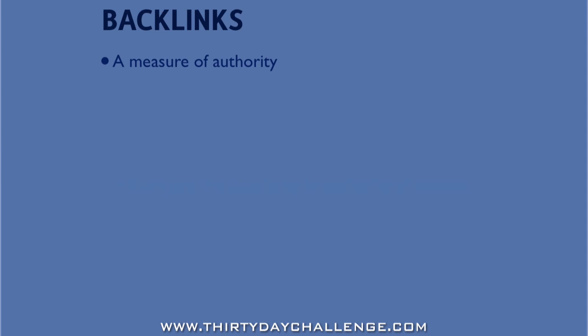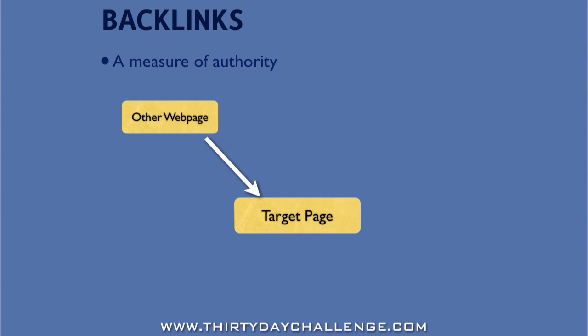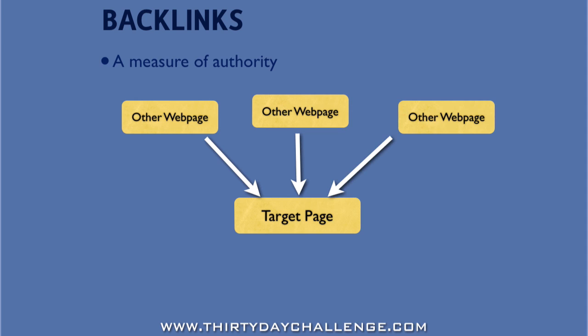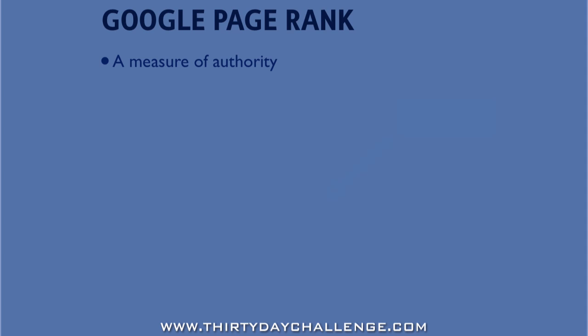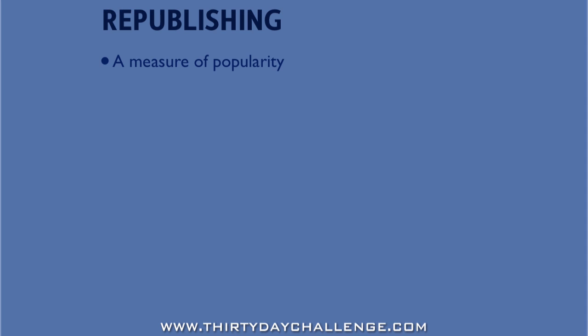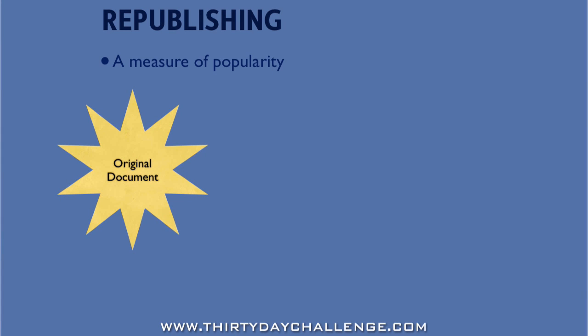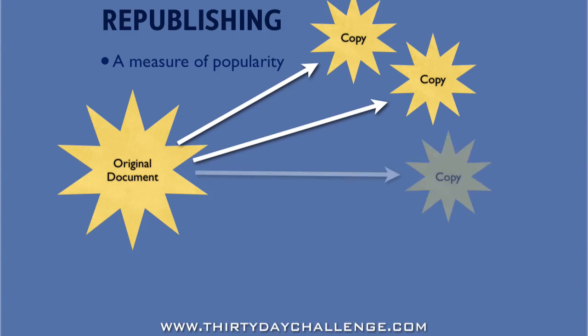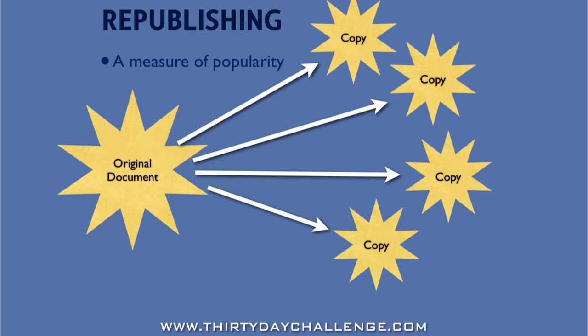So, how do we assess popularity? Basically, if we're comparing two webpages and the first has a number of incoming links or backlinks and the second has none, then we'd say the first is more popular or more authoritative. Backlinks are links from other webpages back to our target page — other website owners have taken the time to create those links. The more backlinks, generally speaking, the more popular. Also, if we're comparing two pages and the first has a higher Google page rank, we'll say it's more popular. And if a page has been republished in different places around the web a number of times, that also indicates greater popularity.